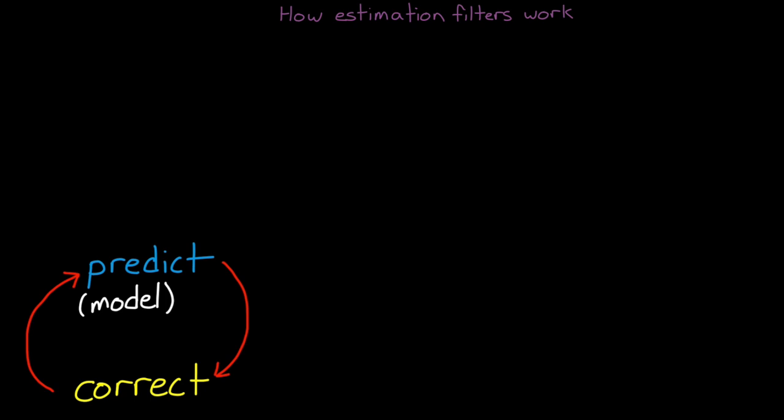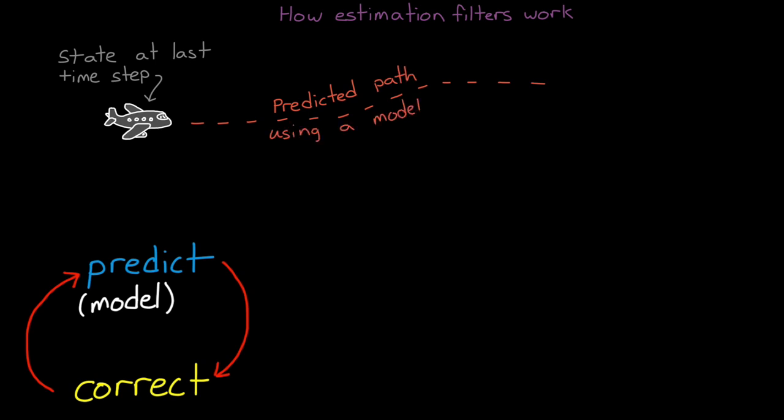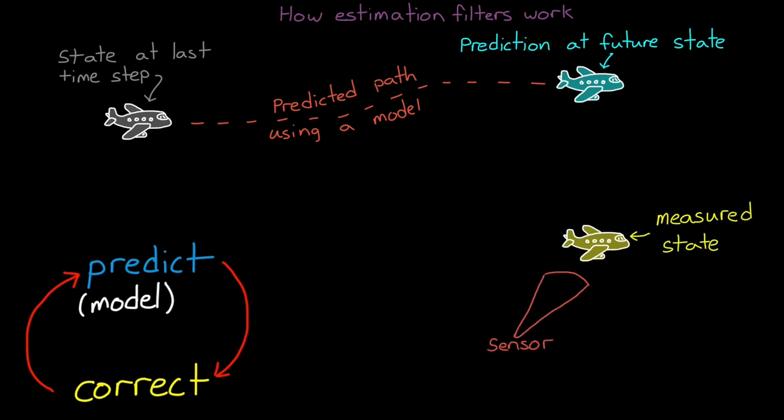In order to predict, we have to give the filter a model of the system. Something that it can use to estimate where the system will be at some time in the future. At that future time, a measurement of the system's state is made using one or more sensors. Then we use that measured state to correct the predicted state, based on the relative confidence in both it and the prediction.